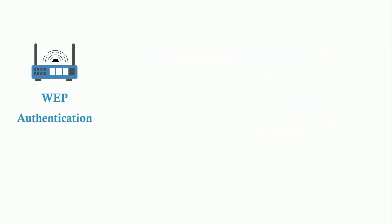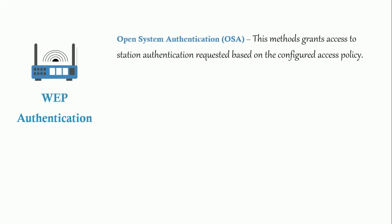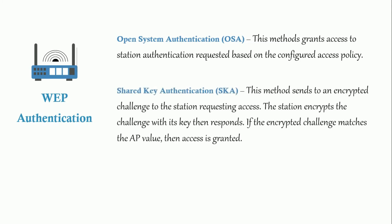WEP Authentication: Open System Authentication (OSA) — this method grants access to station authentication requested based on the configured access policy. Shared Key Authentication (SKA) — this method sends an encrypted challenge to the station requesting access. The station encrypts the challenge with its key then responds. If the encrypted challenge matches the AP value, then access is granted.